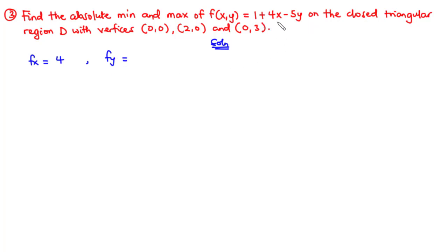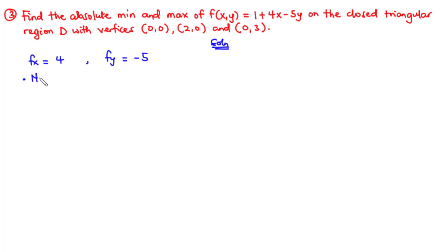We move on to fy, the first-order partial derivative of the function with respect to y. Differentiating term by term with respect to y: we differentiate 1, we have 0; for x, we have 0; for negative 5y, we have negative 5. Now because fx and fy are constants, we cannot set both of them to 0 to find values of x and y. Hence, this function has no critical point.